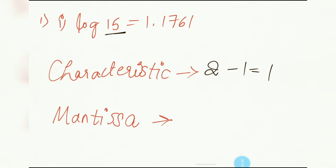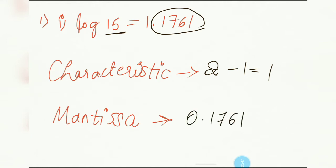Mantissa is just the value after the point. So 0.1761 is the mantissa.